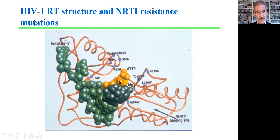This is where a nucleoside RT inhibitor would bind. But the NNRTIs bind at a remote site. By doing so, they alter the conformation of the enzyme in a way that prevents it from carrying out its function of creating a double-stranded DNA version of the RNA genomic material of the virus.